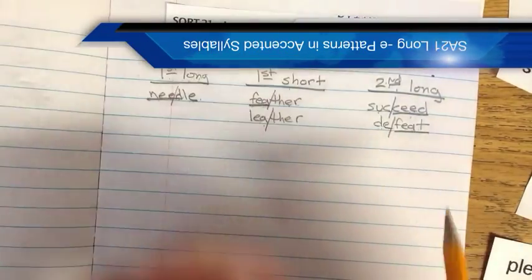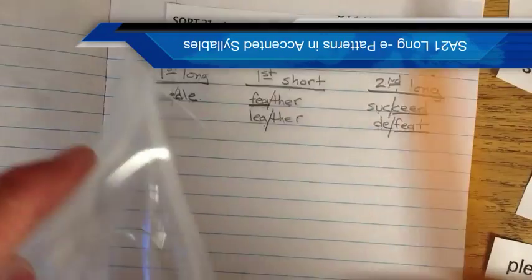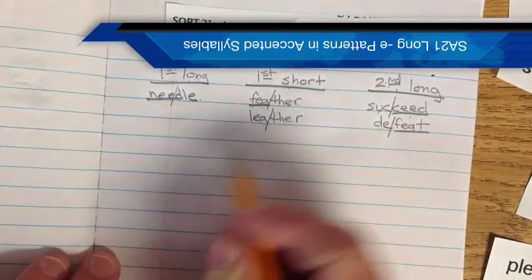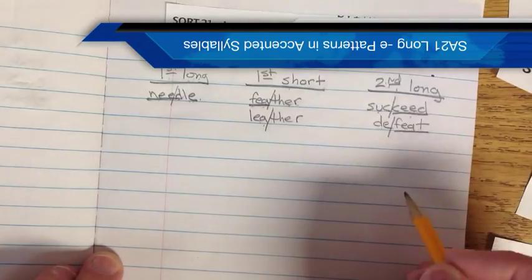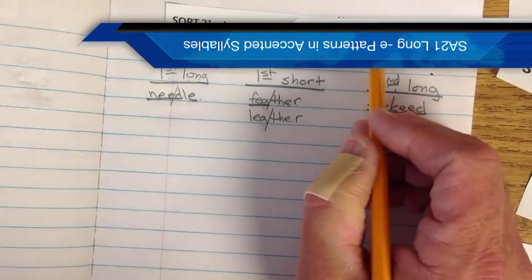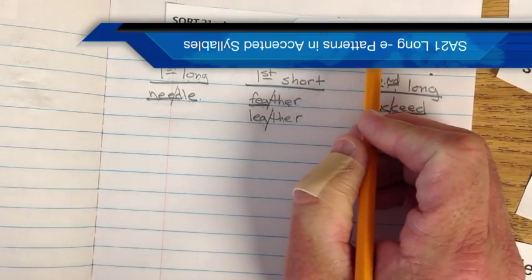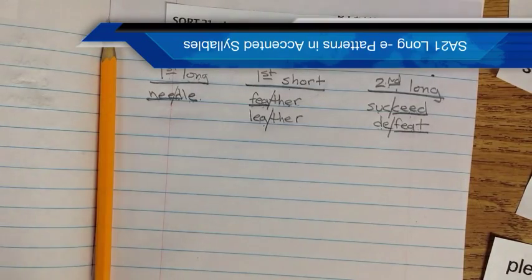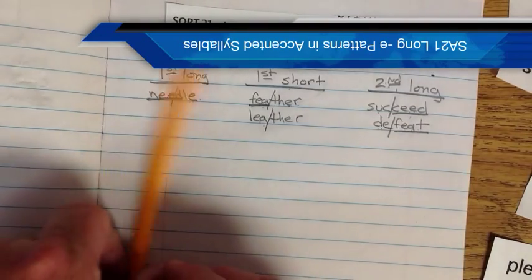So now what I need you to do is I need you to take all the rest of the words. And I need you to put them on here under the first long, first short, or second long. I also need you to put the lines where the syllable is. You need to know that. Alright?